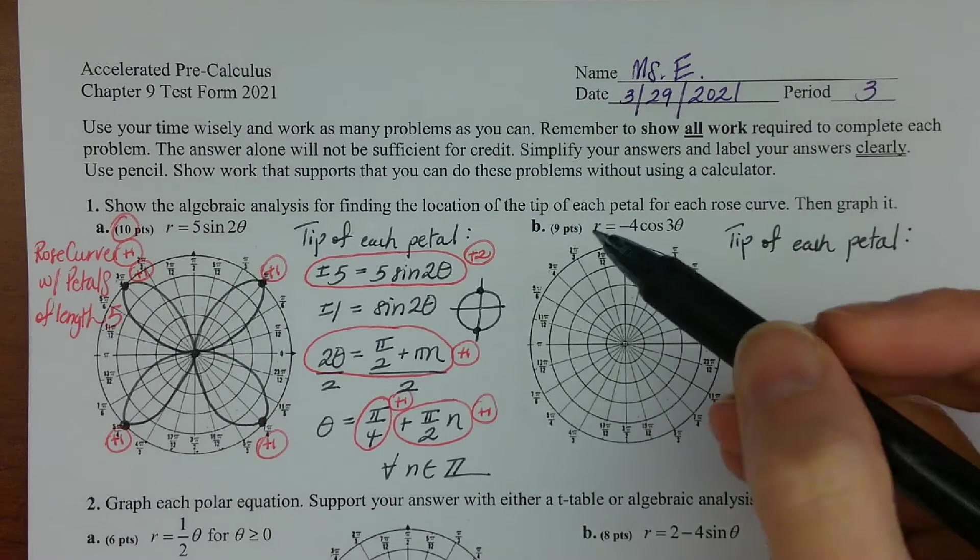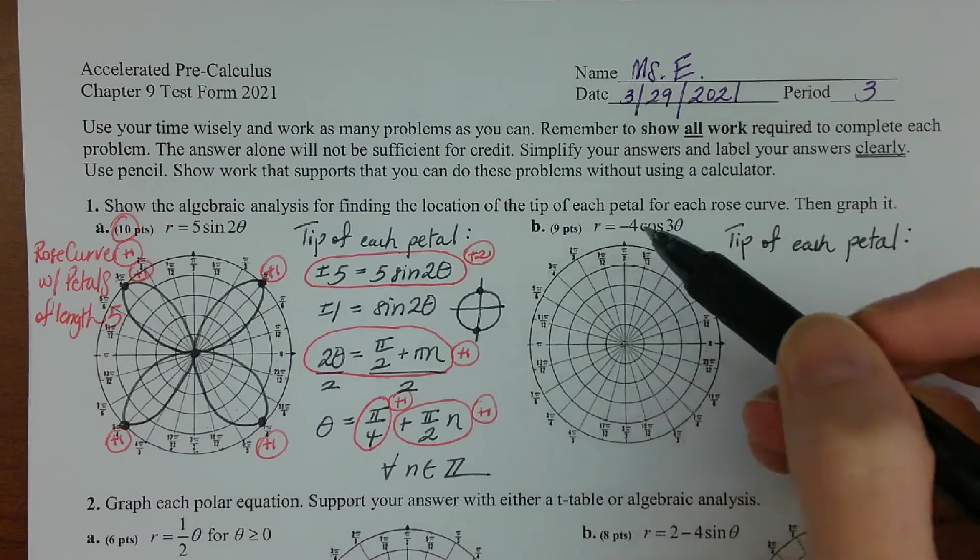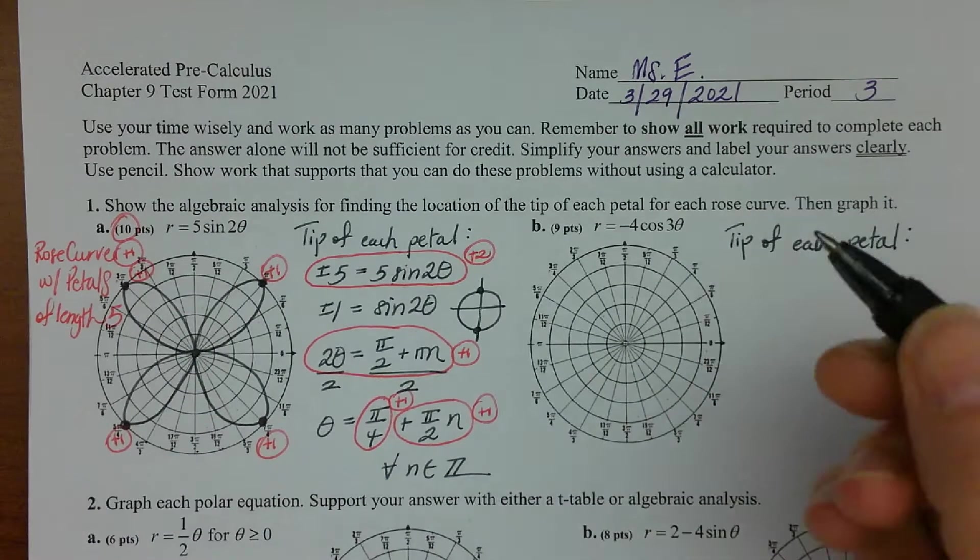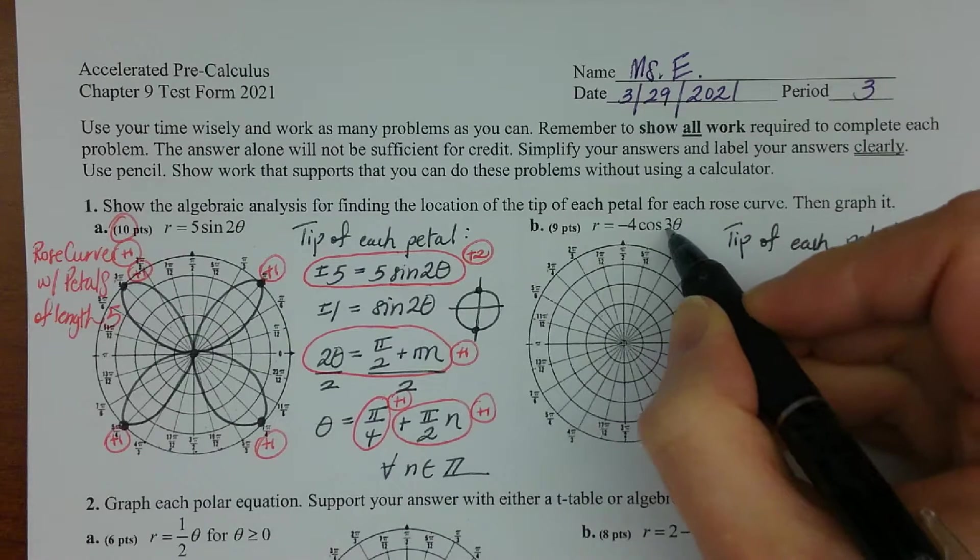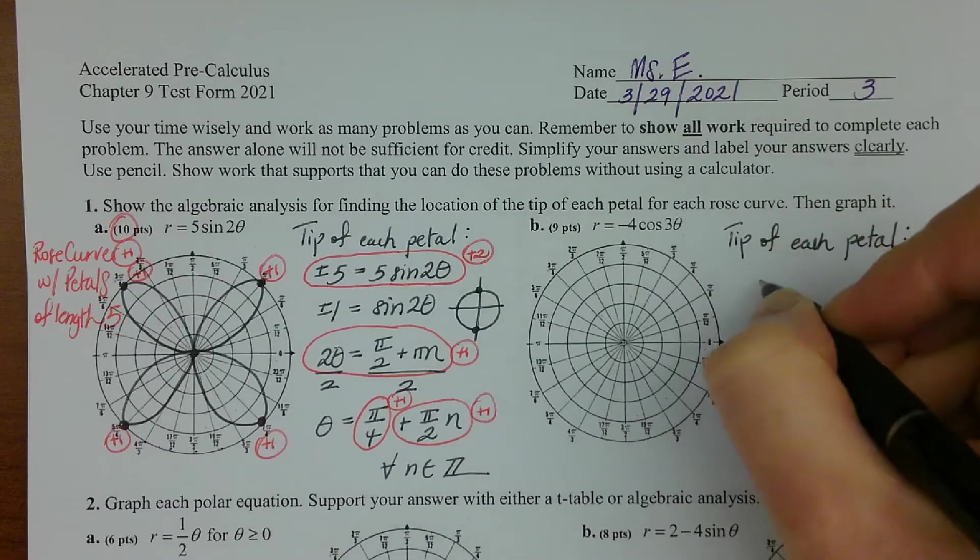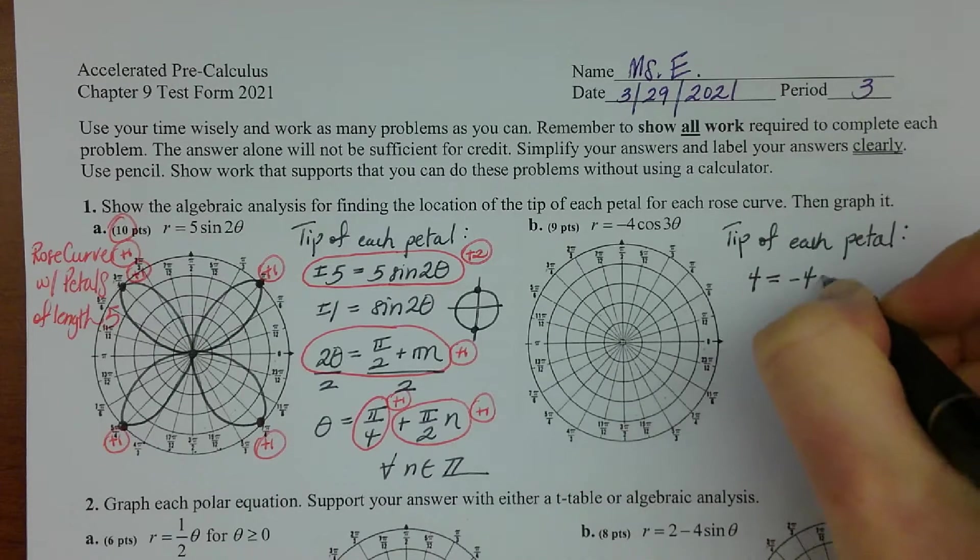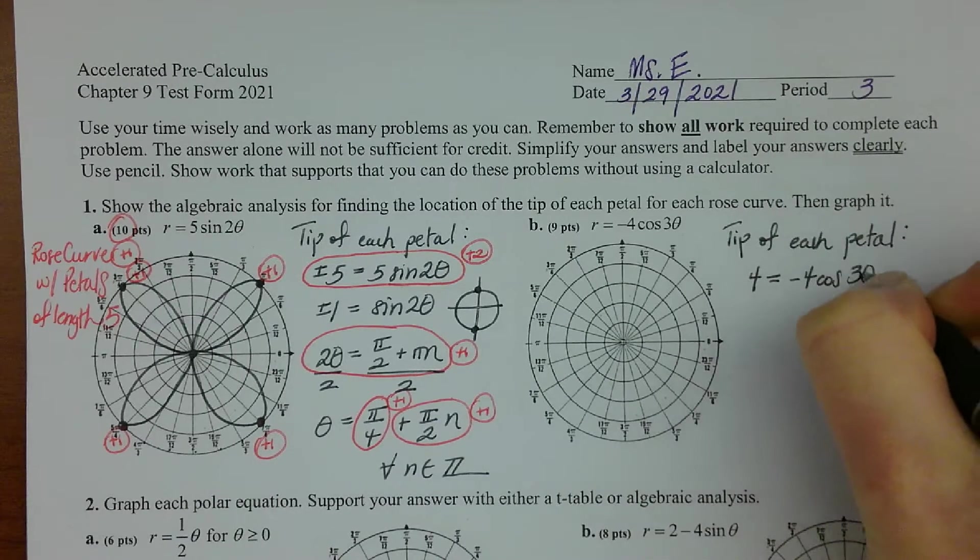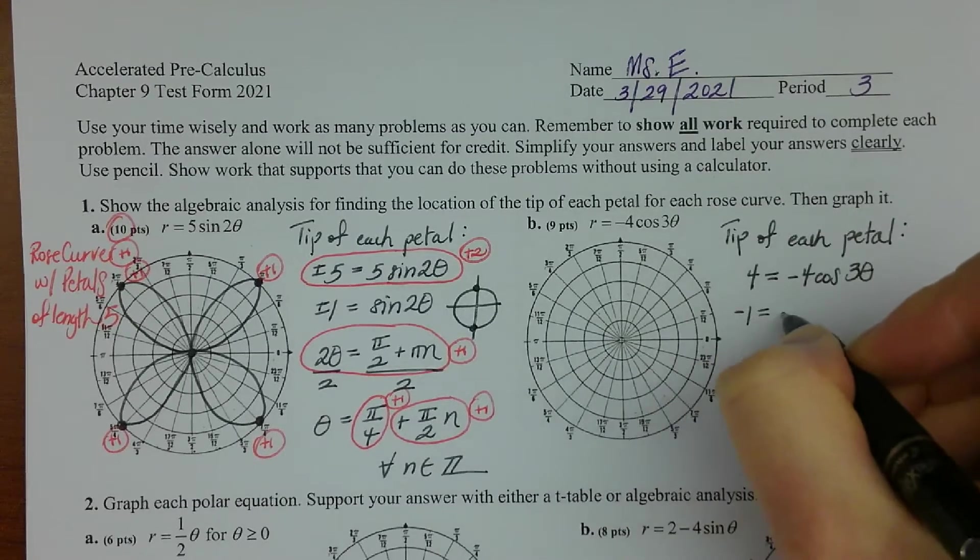So basically if you get kind of a mirror image of what I'm getting, then it's likely that you asked maybe for r to be negative four but then you treated it like you asked for r to be positive four. I hope that makes sense. Okay, so since you have an odd number here you'll get exactly three petals. And so I'll set r equal to four and then just solve for theta. So dividing by negative four would give me a negative one over here.